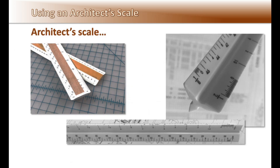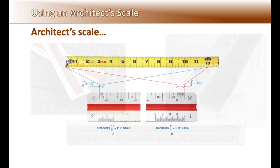An architect's scale is available in both three-sided triangular form and flat two-sided form. On a typical triangular architect's scale, there are ten scales, with one edge showing a foot in inches and fractions of an inch. Understanding scales can be confusing. Just remember, you can't show the building in full scale on the drawing, so the drawing's scale is defined so that some fraction of an inch or a whole number in inches equals one foot.